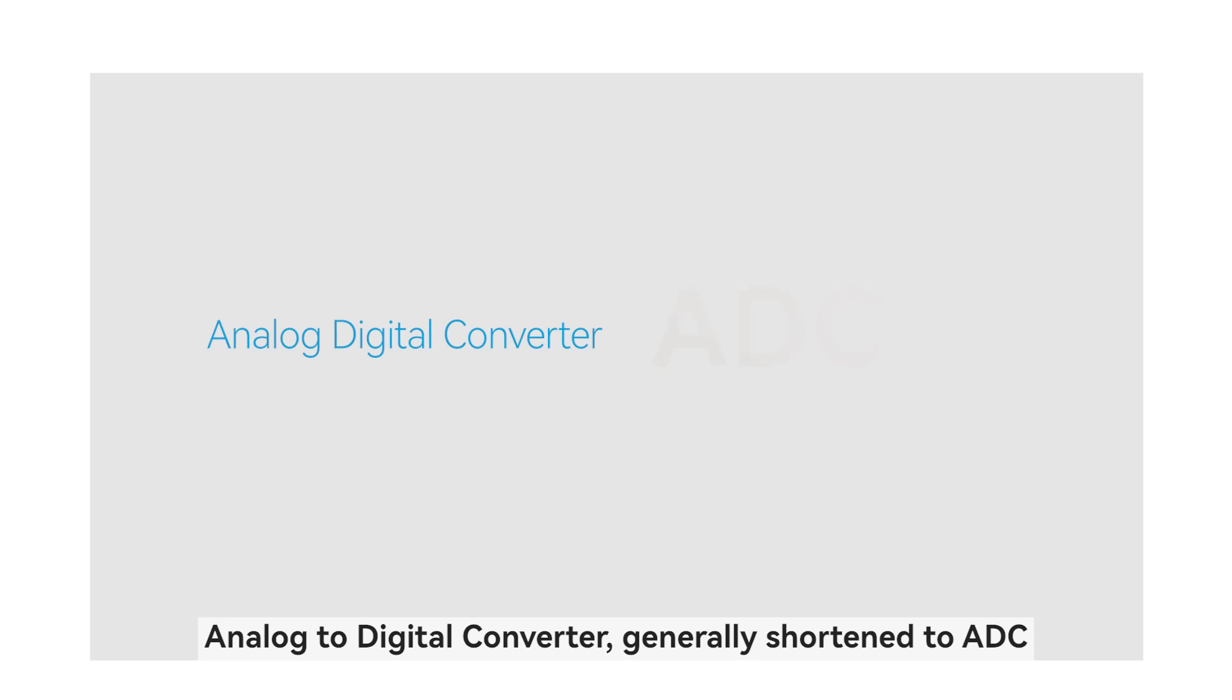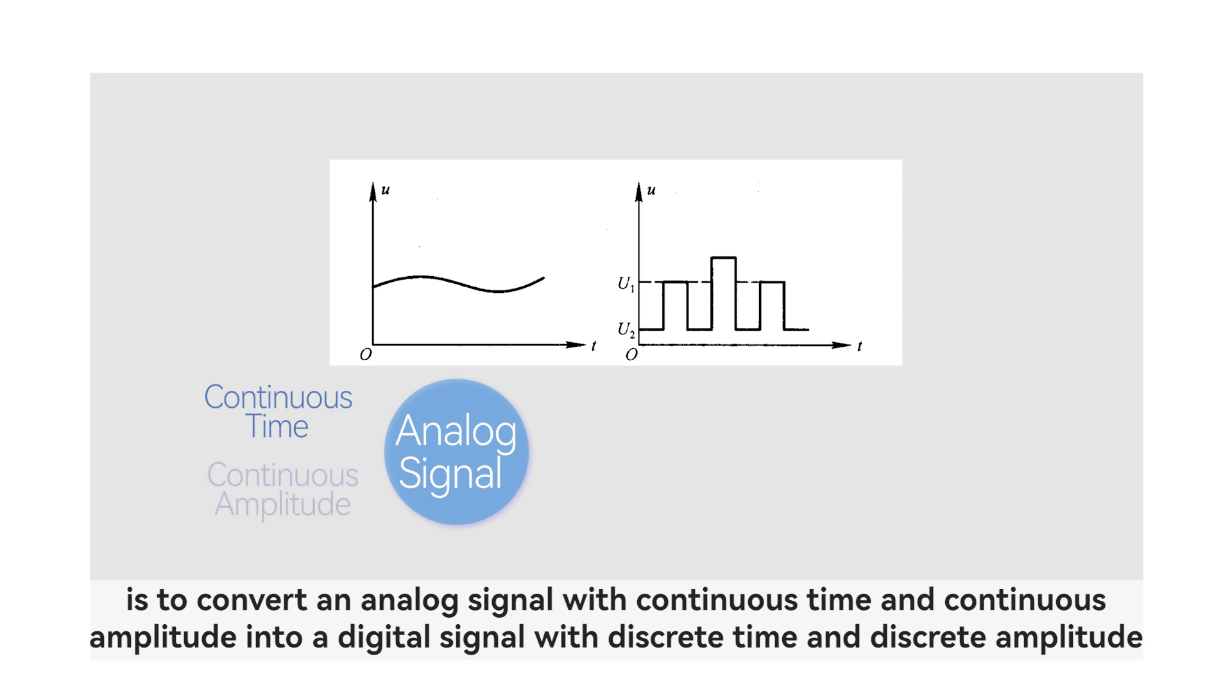Analog to digital converter, generally shortened to ADC, is to convert an analog signal with continuous time and continuous amplitude into a digital signal with discrete time and discrete amplitude.